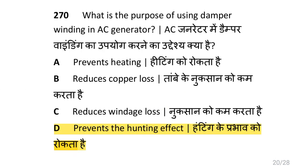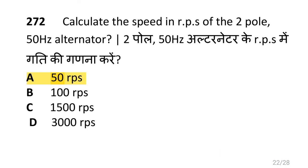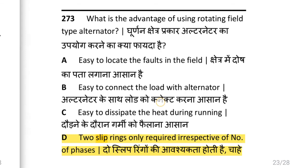What is the purpose of using damper winding in an AC generator, i.e. to prevent the hunting effect? What is the type of alternator, i.e. brushless alternator? Calculate the speed in RPS of a two-pole 50Hz alternator, i.e. 50 RPS.